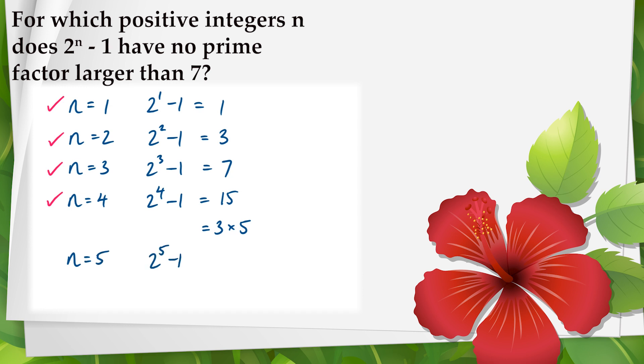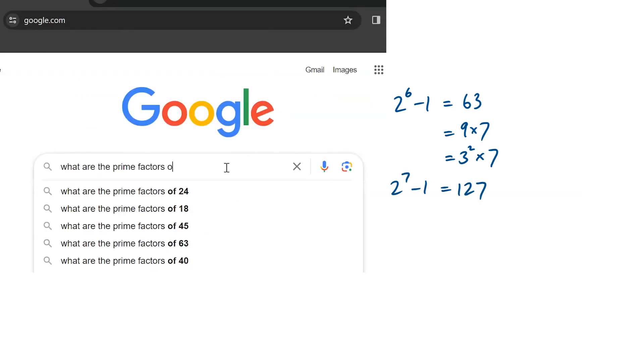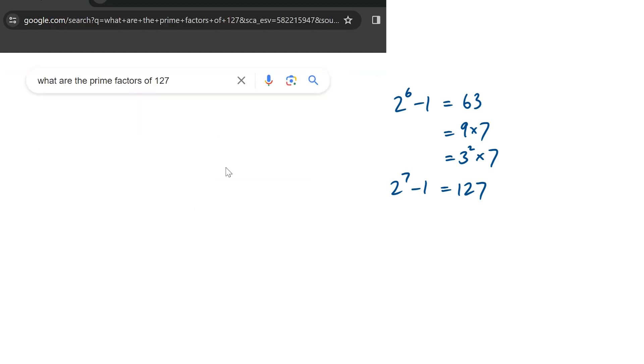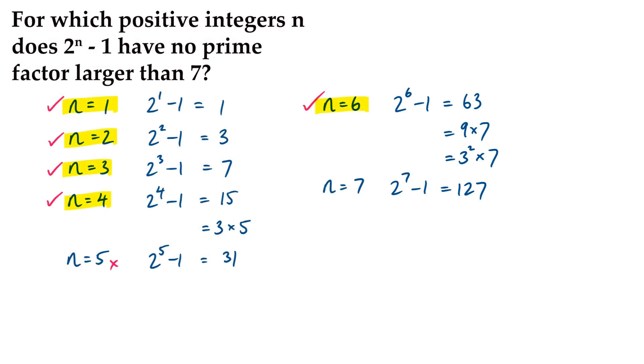But when n is 5, we'll get 31, which is prime and larger than 7, so no good. n equals 6 gives 63, which is 9 by 7 or 3 squared by 7. Again, no prime factor larger than 7, so this is in our solution set. 2 to the 7 minus 1 is 127, which is prime, which we can test by recognizing that we've got to try all primes up to about 11, and 3 doesn't work, 5, 7, 11 don't work, that is prime.